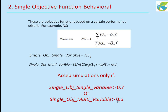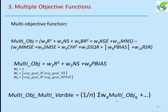With a multiple objective function, you can use different performance criteria to build a combined objective function. You can use R-squared, Nash-Sutcliffe, P-bias, or any other combination, and give a weight to each one. The weights are given in such a way that each has equal contribution to the overall objective function. You can apply the same thing to multiple variables and just average the multi-objective across different variables.